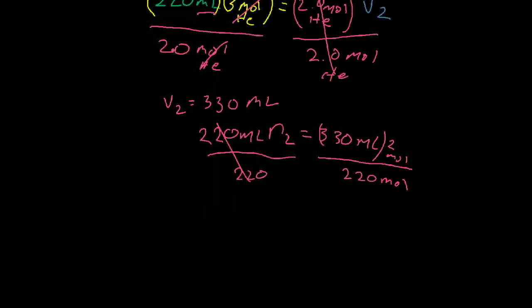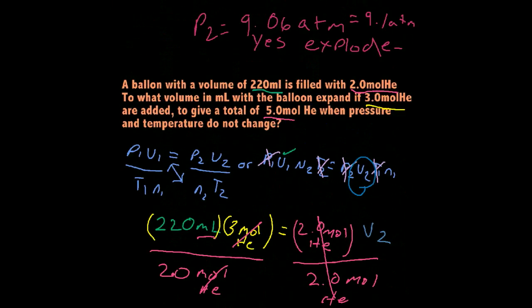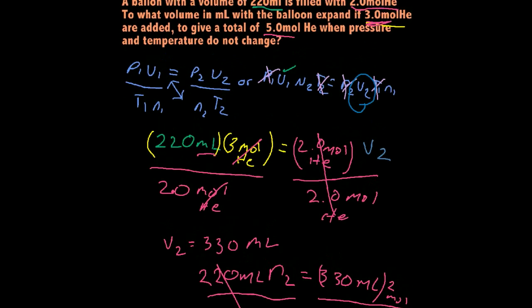And it equals 3. And 3 was our N2, if you remember, in the original problem. So that's how you can just as easily go back and forth on those and solve for the unknown. Anyway, I hope that helped. Thanks for watching.